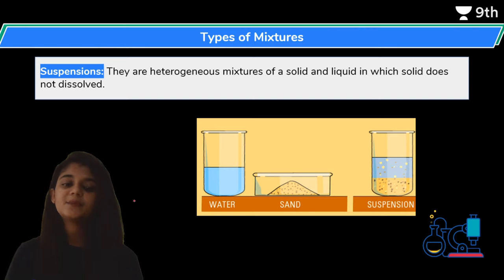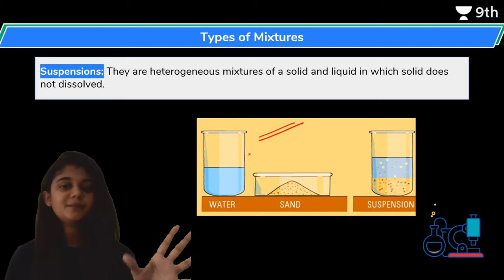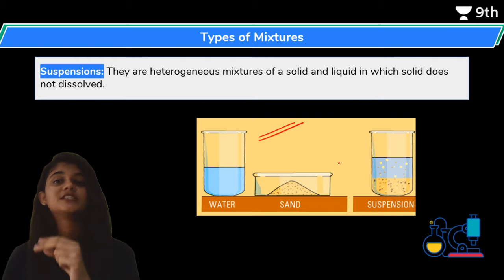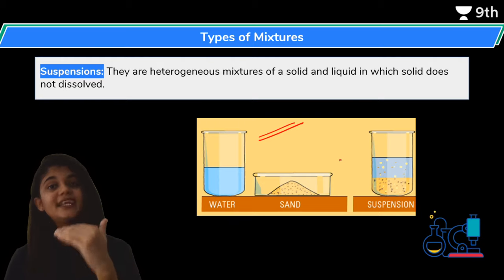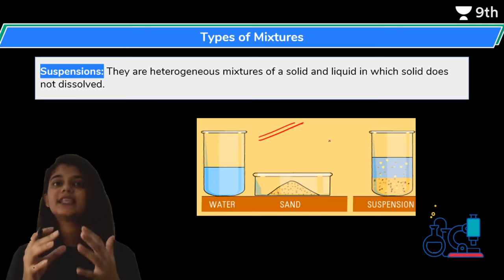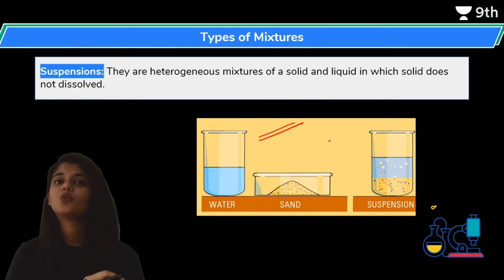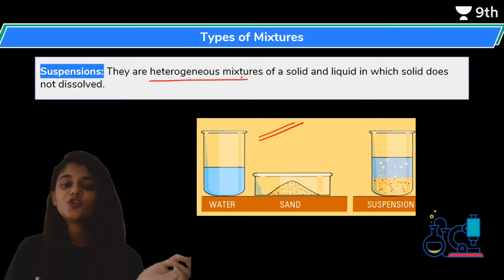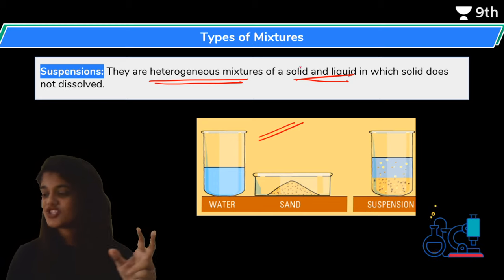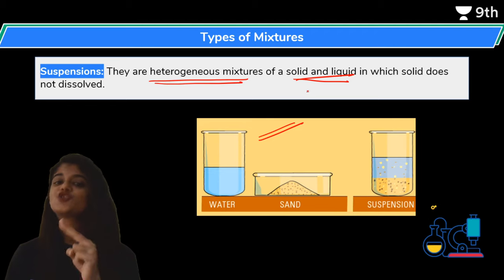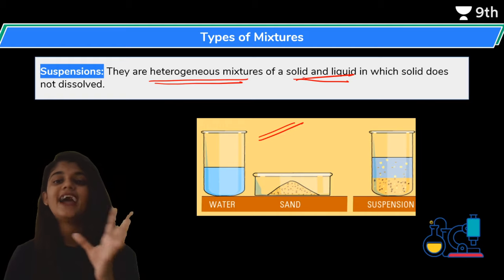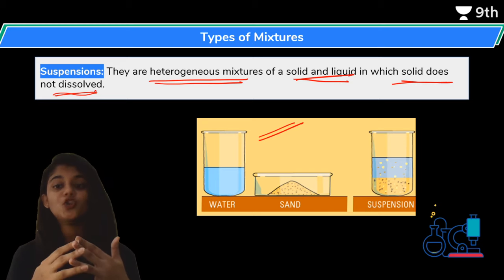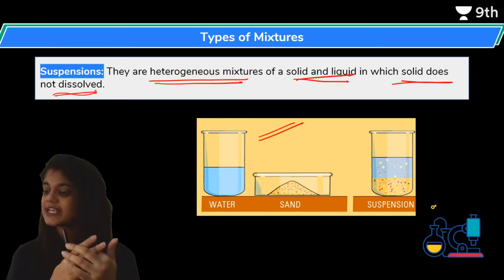The next category is suspension. Looking at this picture, if we take water and add sand to it, sand and water don't mix. No matter how much you try to dissolve it, sand does not dissolve in water. Instead, it settles down at the bottom like a precipitate. Its size is so large that you can see it slowly settling at the bottom. This type of mixture is called suspension - it is a heterogeneous mixture of solid and liquid, in which the solid does not dissolve. Muddy water is a very good example.